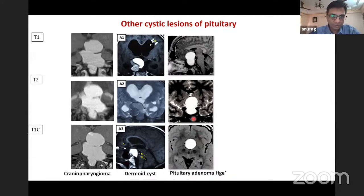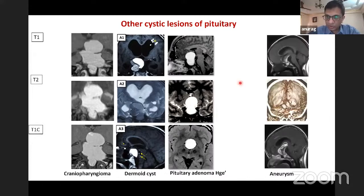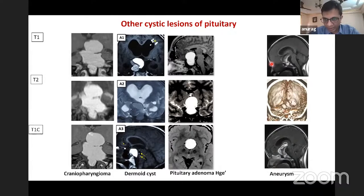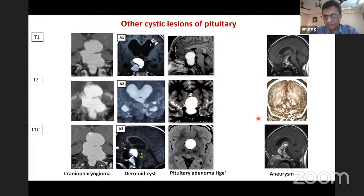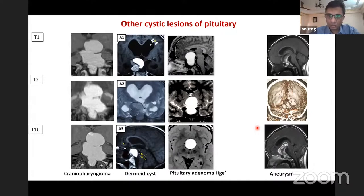One case of headache and hemiplegia presented with a sellar mass that looked very unusual. When discussed with the radiologist, T2 flow void images were identified, and it turned out to be an aneurysm of one of the vessels. We were very thankful to the radiologist for the right diagnosis, as surgery would have been catastrophic.